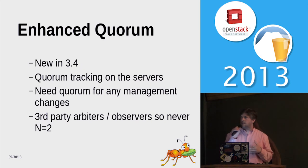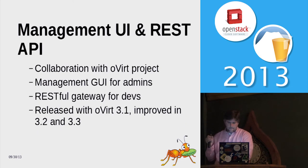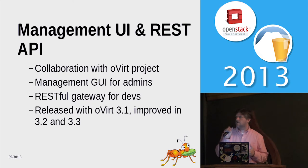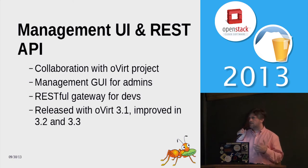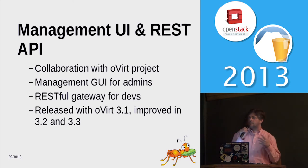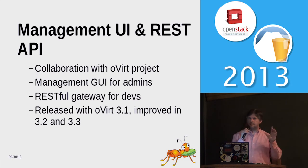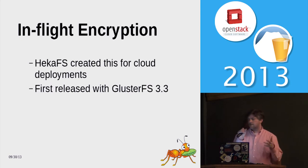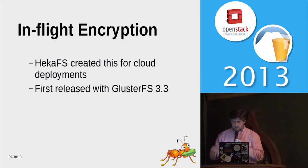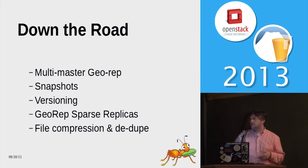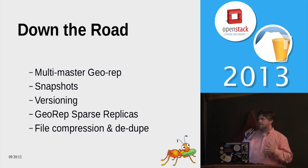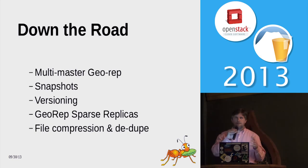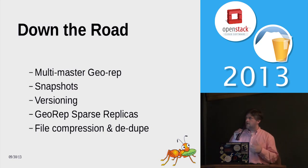3.4 also goes through some changes to quorum management. One of the main new features is a result of our collaboration with the oVirt project. It allows you to manage, instantiate, and import existing Gluster domains using the oVirt interface. When you deploy oVirt, you can do it either for generalized virtualization management or just for Gluster-specific management. Additionally, there's in-flight encryption via an OpenSSL integration.